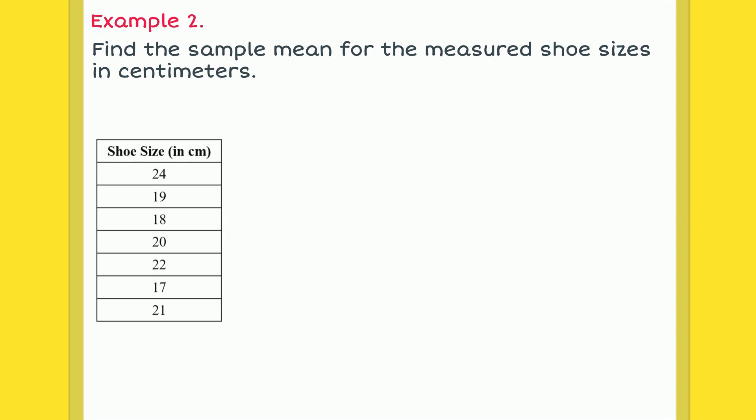For this next example, we'll look at a sample of shoe sizes from a given school. Adding together their values, we'll get 141. We can now divide this by 7. This gives us a mean of about 20.14 cm if we round to two decimal places.